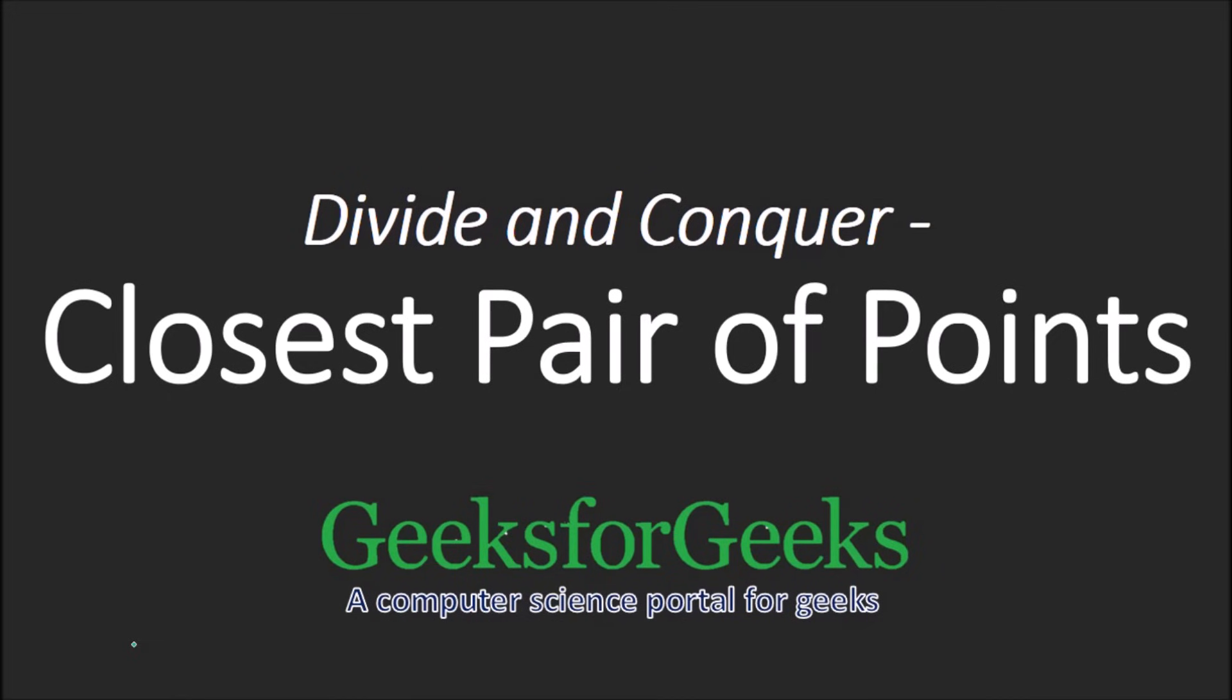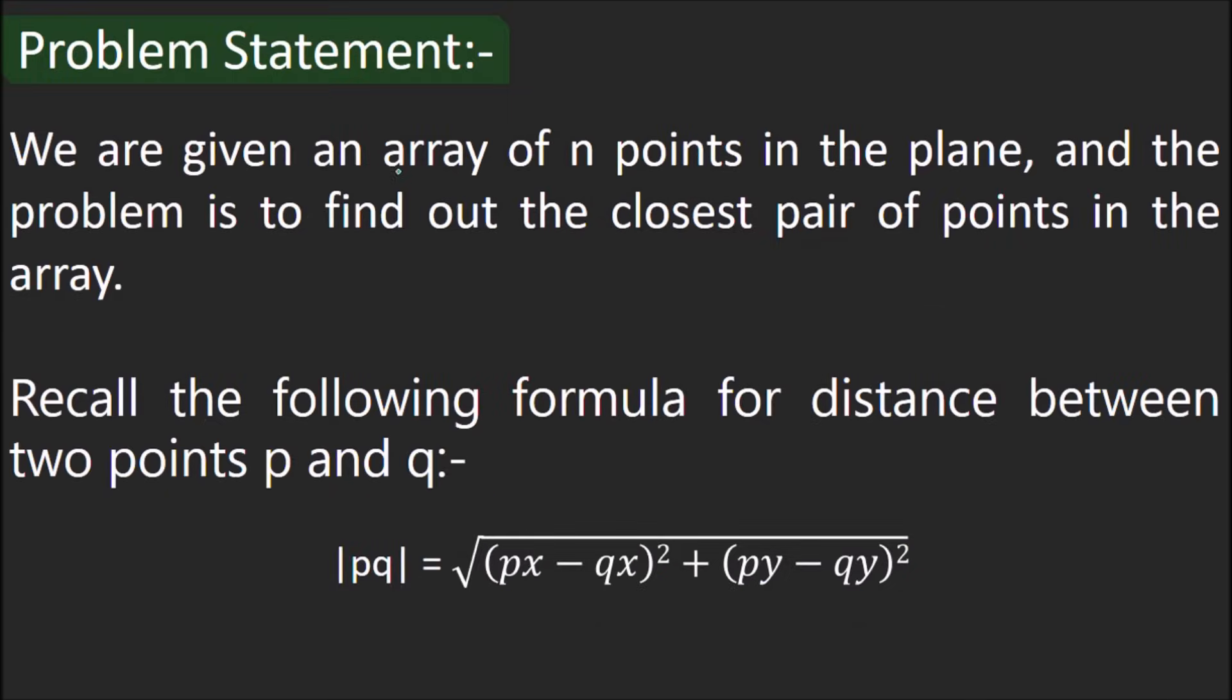Closest pair of points in a plane using divide and conquer. Problem statement: We are given an array of n points in the plane and the problem is to find the closest pair of points in the array.